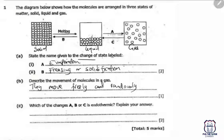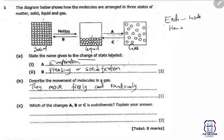The next part asks which of the changes A, B, or C is endothermic. Endothermic means 'endo' — inside — and 'thermic' — heat. So we are talking about a process in which heat is taken inside, that is, absorbed.